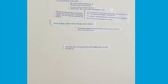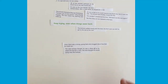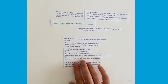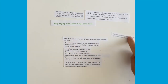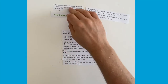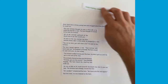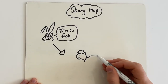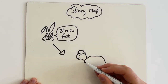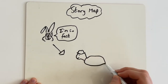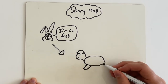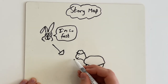Another good way to use this resource is to cut out the sections of text and jumble them up, then get your pupils to try and put them into the correct order. You could even get your pupils to show their understanding of the structure of the story by creating a simple story map.